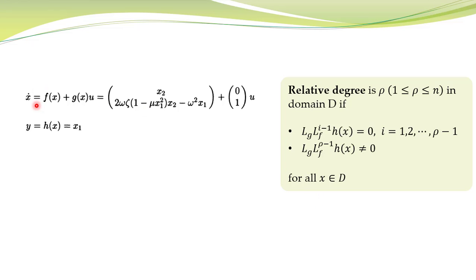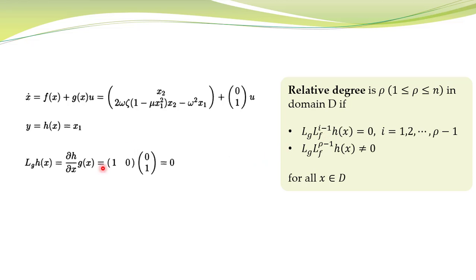Let's elaborate with an example. We have a nonlinear system and we want to apply this definition to study its relative degree. We compute the expression for i equal to 1, which gives L_g h(x). L_g h(x) is equal to the partial h over partial x times g(x). The partial derivative with respect to x1 is 1 and with respect to x2 is 0, multiplied by g(x). This comes out to be equal to 0.